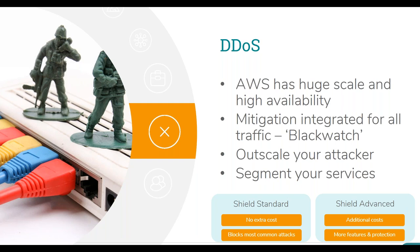Traditionally DDoS is hard to cope with. I think the first thing you get from AWS is that huge scale and high availability — everybody benefits from that as an AWS customer. I've seen firsthand a demonstration where AWS soaked up a 30 gigabits per second attack and the web application at the back end continued to operate. To be able to soak up that amount of traffic is mind-blowing — it's hard to outrun that.